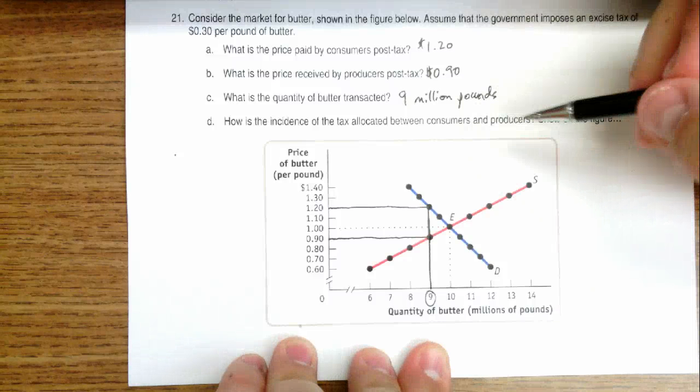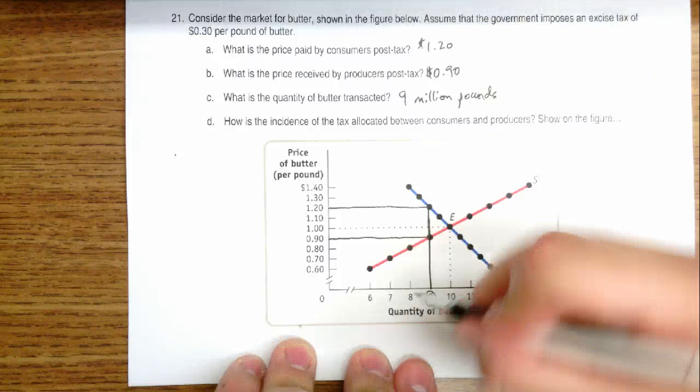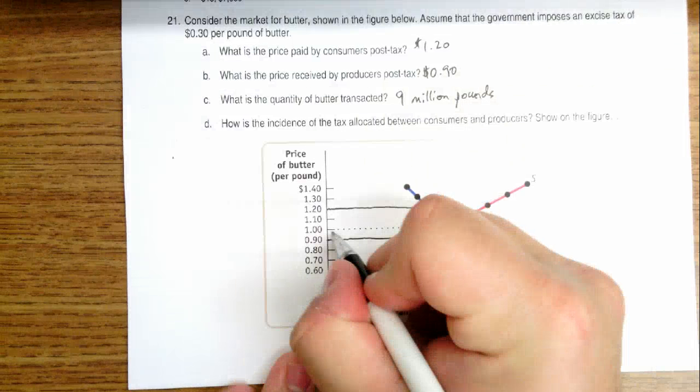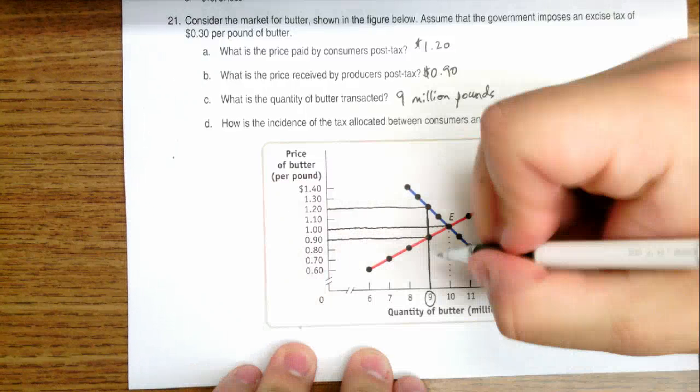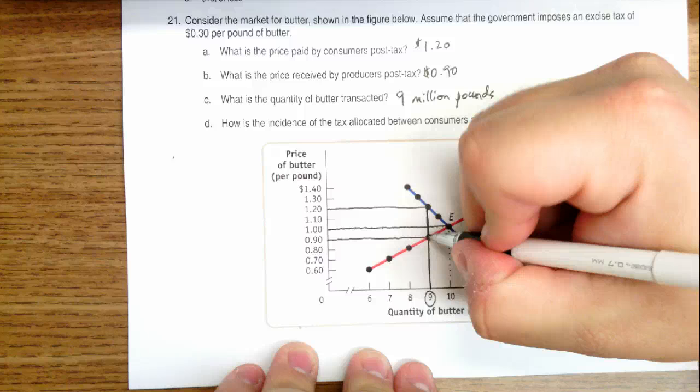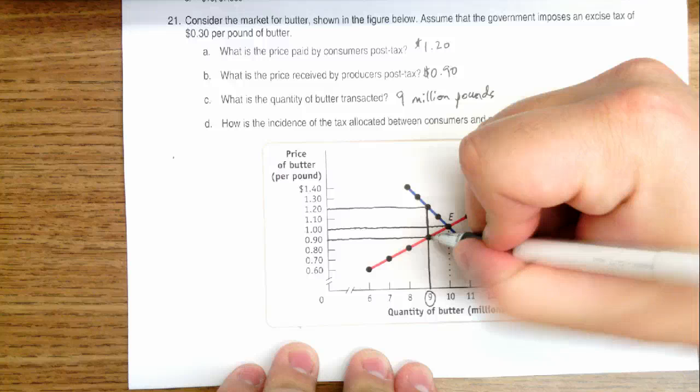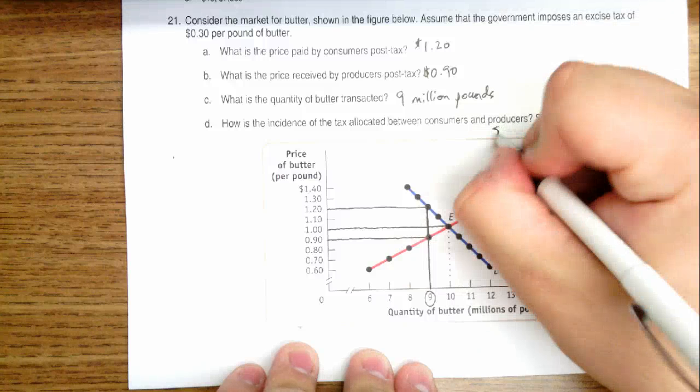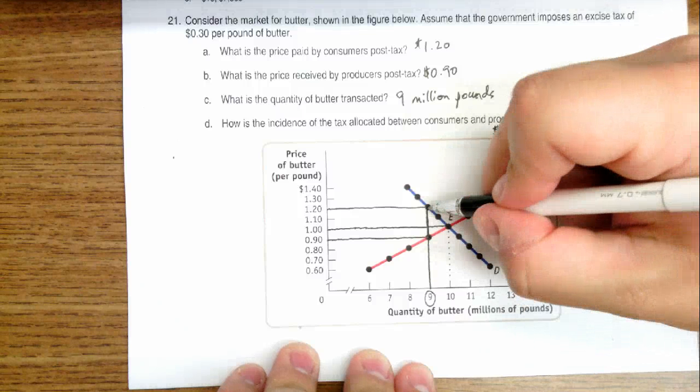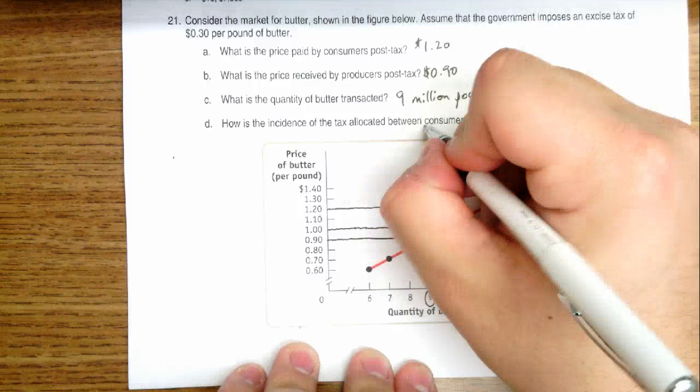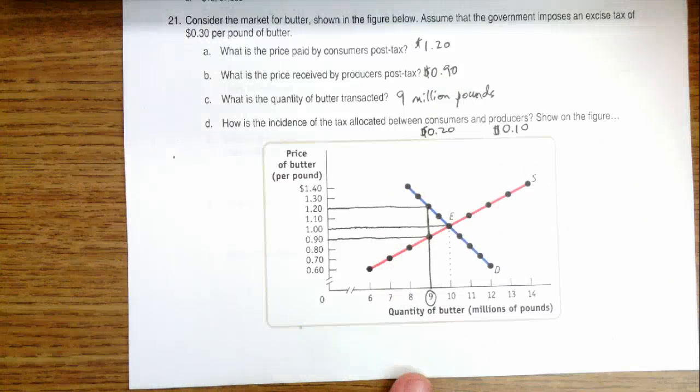And it says, how is the incidence of the tax allocated between consumers and producers? Well, what we do is we look at this tax wedge. We look at the original equilibrium, which was at $1. And we say then that the producers are essentially losing $0.10 on every sale compared to what they were getting before. Before they were getting $1, now they're only getting $0.90. So producers are paying $0.10 of the tax. Consumers were paying $1, now they're paying $1.20, which means they're essentially paying $0.20 of the tax. And that's how you answer this question.